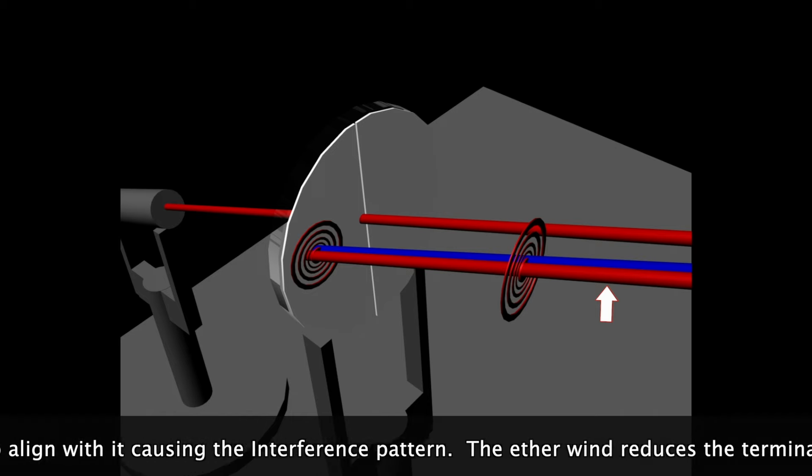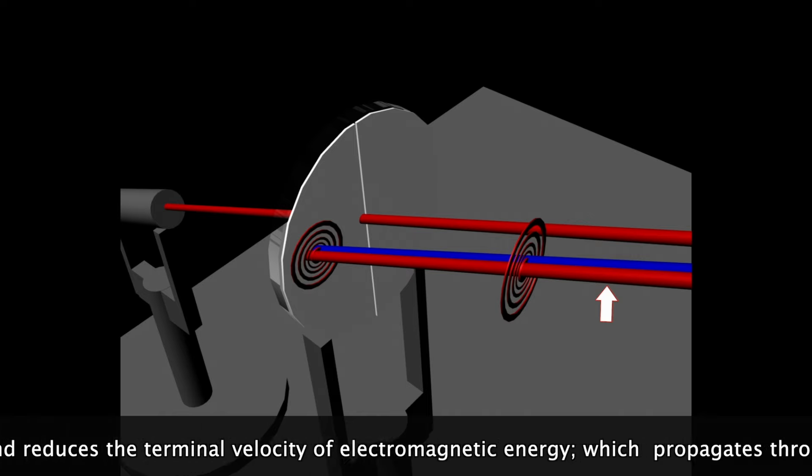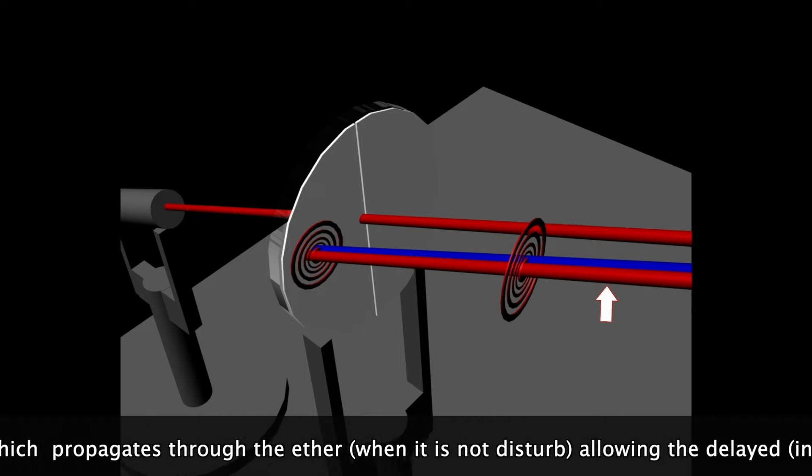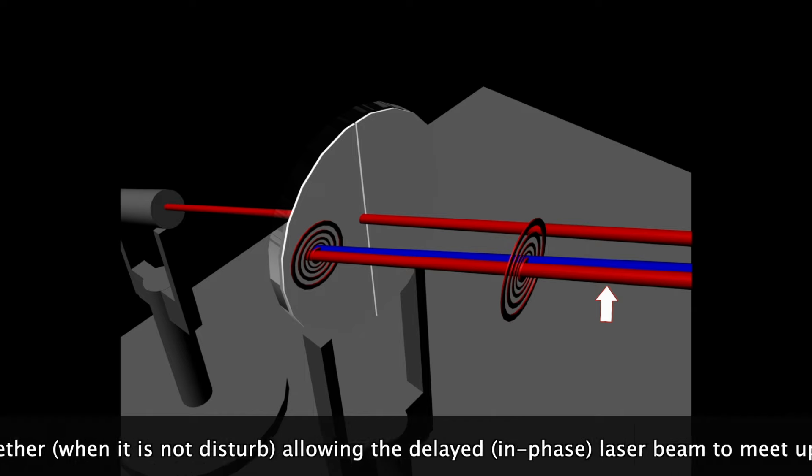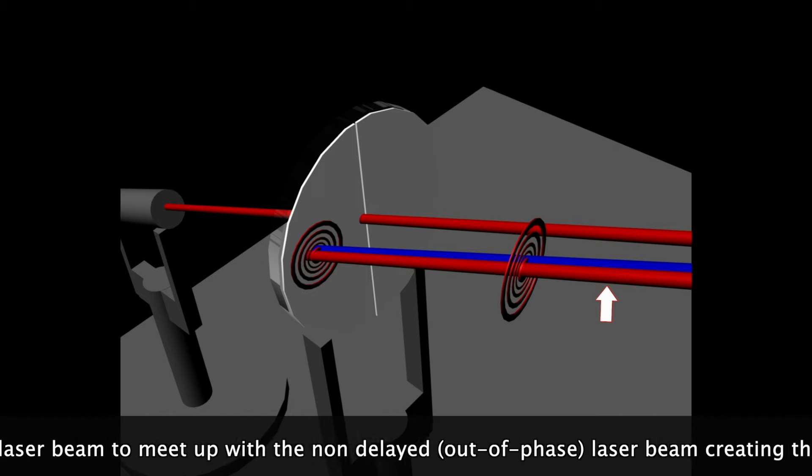The ether wind reduces the terminal velocity of electromagnetic energy which propagates through the ether when it is not disturbed, allowing the delayed in phase laser beam to meet up with the non delayed out of phase laser beam creating the circular interference pattern.